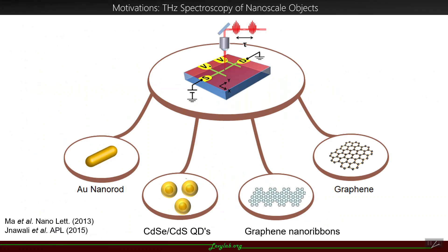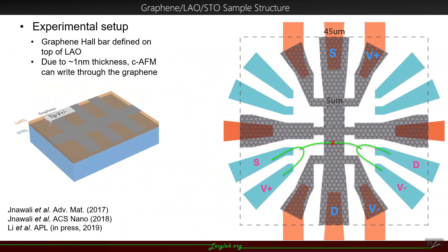We are motivated by terahertz spectroscopy of nanoscale objects, since we have nanometer-scale resolution. This includes gold plasmonic nanorods, semiconducting quantum dots, individual graphene nanoribbons, and graphene itself, which I'll talk more about today. Pictured on the right is a schematic of the graphene Hall bars defined on top of the LAO-STO heterostructure, with the nanojunction device drawn on top. Due to the less than 1 nanometer thickness of the graphene, using CAFM lithography we're able to write through the graphene to create the nanojunction device at the interface underneath.